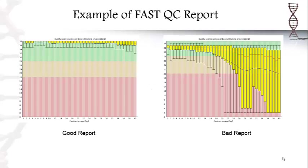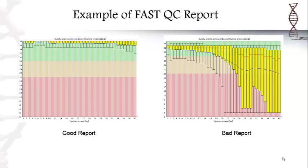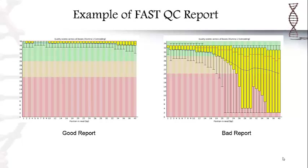Here we have two examples of quality assessment graphs. On the left, we have a brief overview of what researchers want in a good report — it is very consistent in the varying positions. Whereas on the bad report, which is on the right, there are variations and errors in the reads at varying positions.